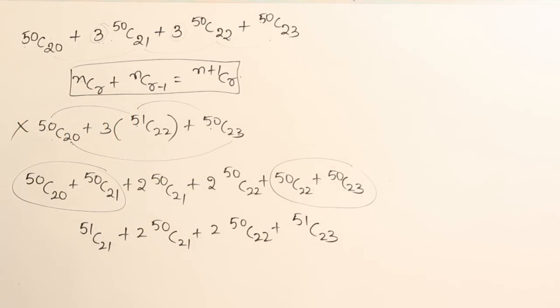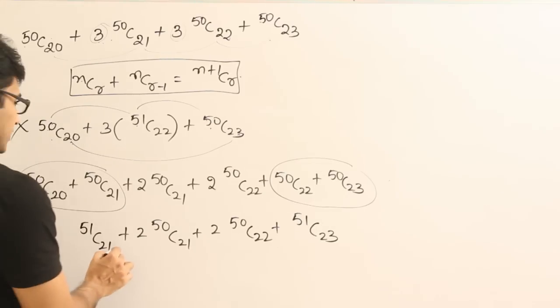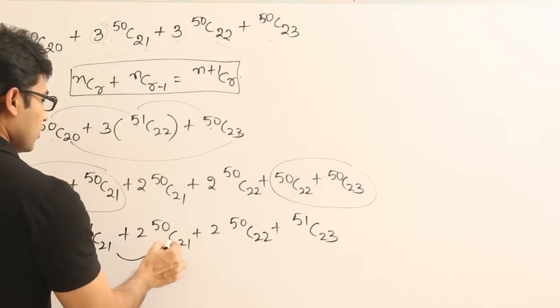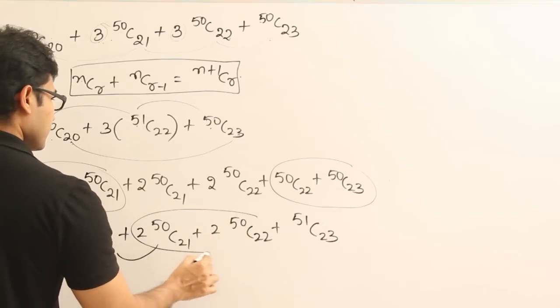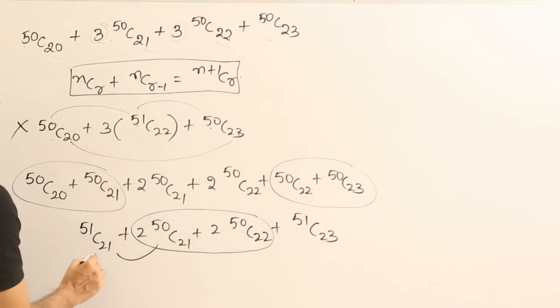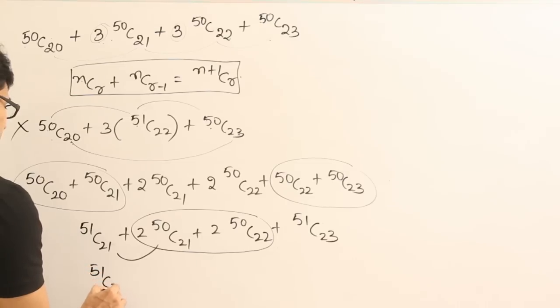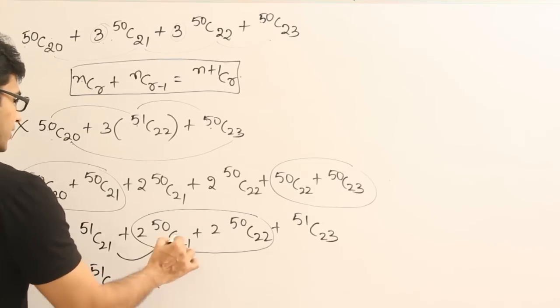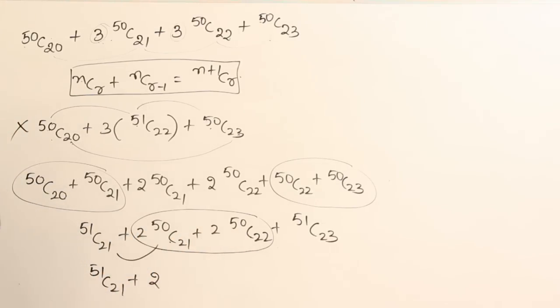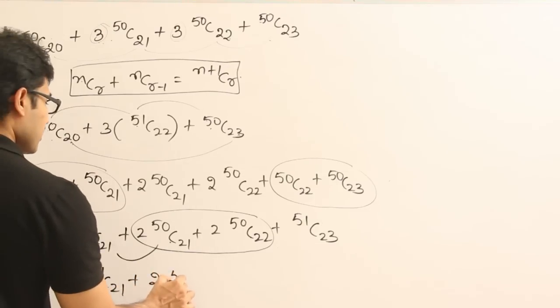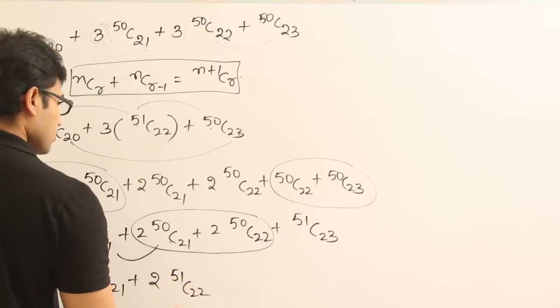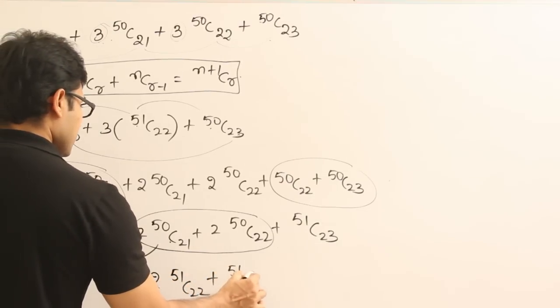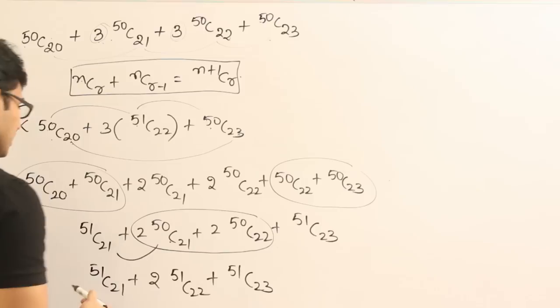Now again we can again I want to combine. So what can we combine here? So again we can combine these two. Okay, we can combine only these two. Let's combine these two. Then what do we get? So I am going to get 51C21 plus 2 into, when I combine these two terms by pulling out two as common, so I am going to get 51C22 plus 51C22 plus 51C23.